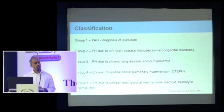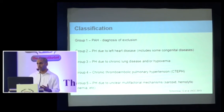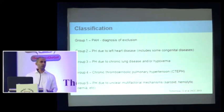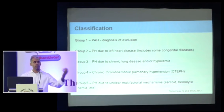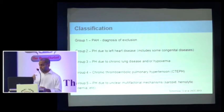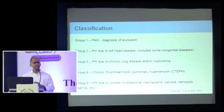PH due to left heart disease, PH due to chronic lung disease — that's group 3, just pulmonary hypertension. Chronic thromboembolic pulmonary hypertension is group 4. Group 5 is a wastebasket diagnosis where different entities are moved in and out at each conference. It's important to know these classifications keep changing.